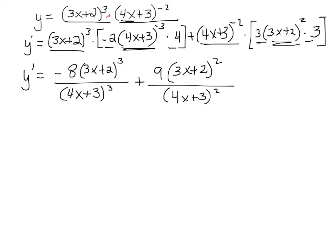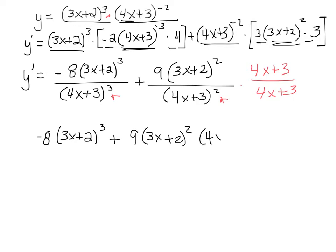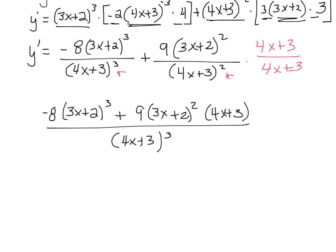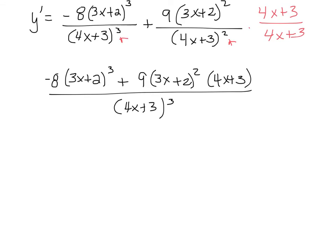to do is get a common denominator. I see I need another 4x plus 3 in this one because there's 3 over here, so I'm going to end up with minus 8 times (3x plus 2)³ plus 9 times (3x plus 2)² times (4x plus 3), all over (4x plus 3)³. Now I see that I